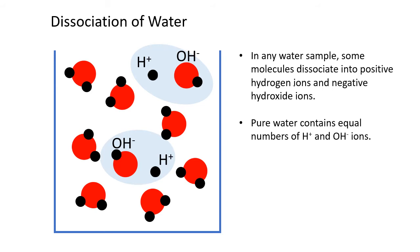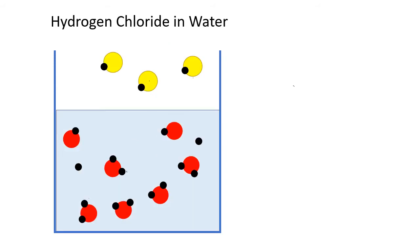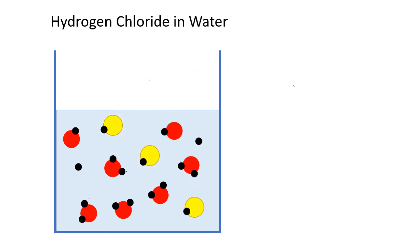Let's use that knowledge to get a better understanding of acids and bases. Here we have some hydrogen chloride floating above a container of water. If you look carefully, you can see that the water consists mostly of water molecules, but two of the molecules in the diagram have dissociated. They have separated into hydrogen ions — the little black circles — and hydroxide ions. You can see in this diagram there are two of each. Let's drop the hydrogen chloride into the water. Hydrogen chloride is a compound where hydrogen acts like a metal, so when we drop it in, the hydrogen chloride molecules will break apart into separate hydrogen ions and chloride ions.